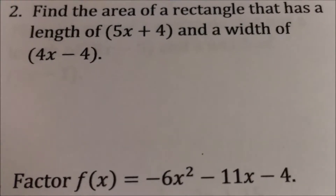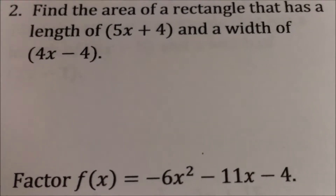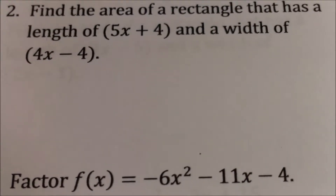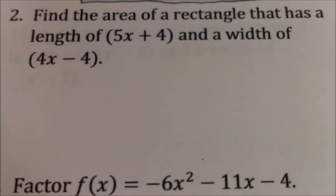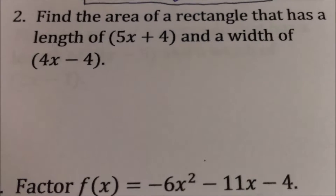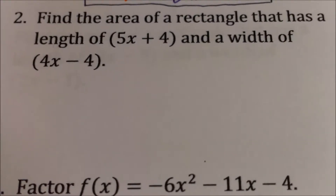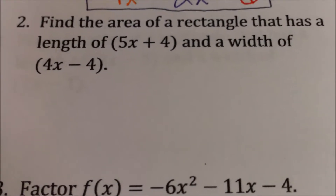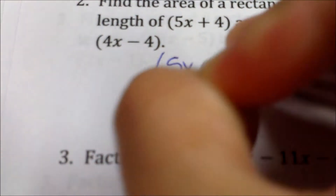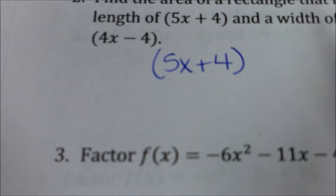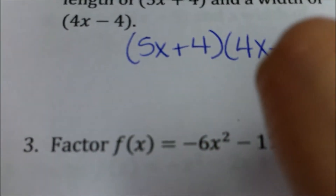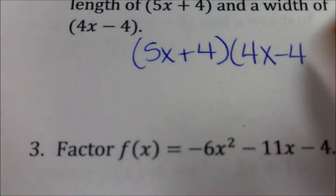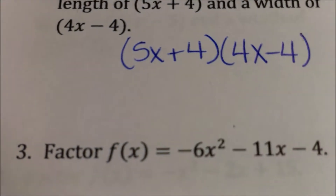Let's move on to question two. Find the area of a rectangle that has a length of 5x plus 4 and a width of 4x minus 4. To find the area of a rectangle, you just multiply length times width. So we're going to multiply 5x plus 4 and 4x minus 4.